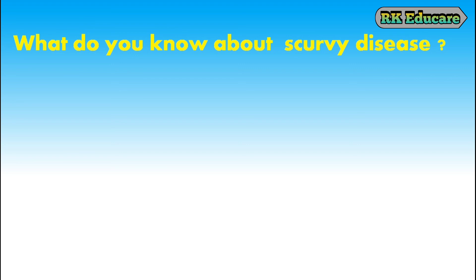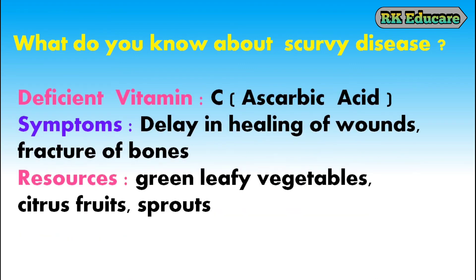What do you know about Scurvy disease? Scurvy disease is due to deficiency of vitamin C, also called ascorbic acid. Delay in healing of wounds and fracture of bones are common symptoms of scurvy. Green leafy vegetables, citrus fruits and sprouts are the resources of vitamin C or ascorbic acid.